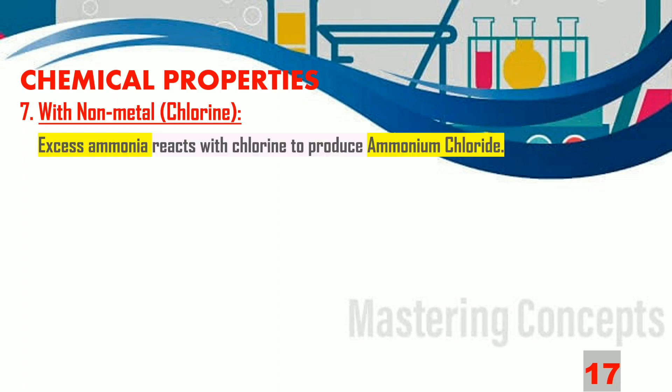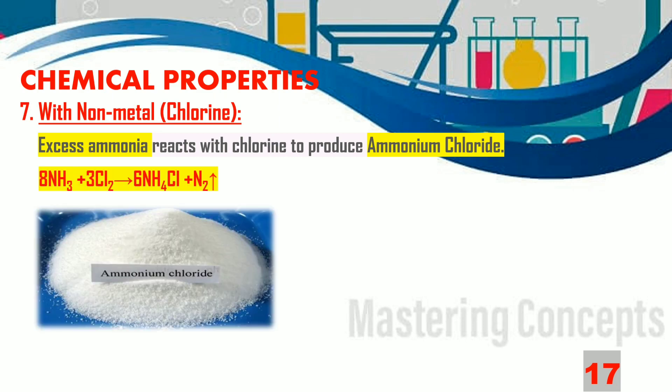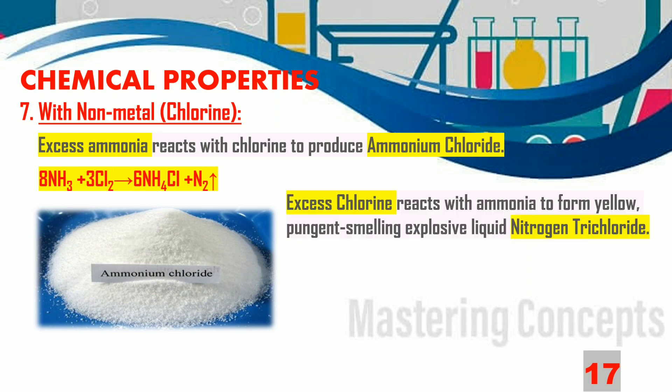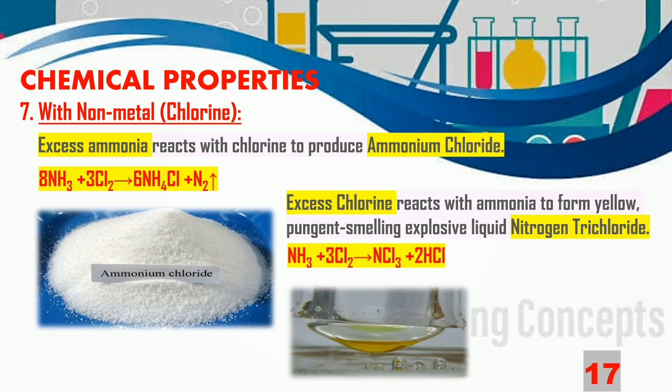With chlorine gas, excess of ammonia reacts to produce ammonium chloride (NH4Cl). Whereas excess chlorine reacts with ammonia to form a yellow, pungent-smelling, explosive liquid called nitrogen trichloride, and hydrochloric acid is also formed.